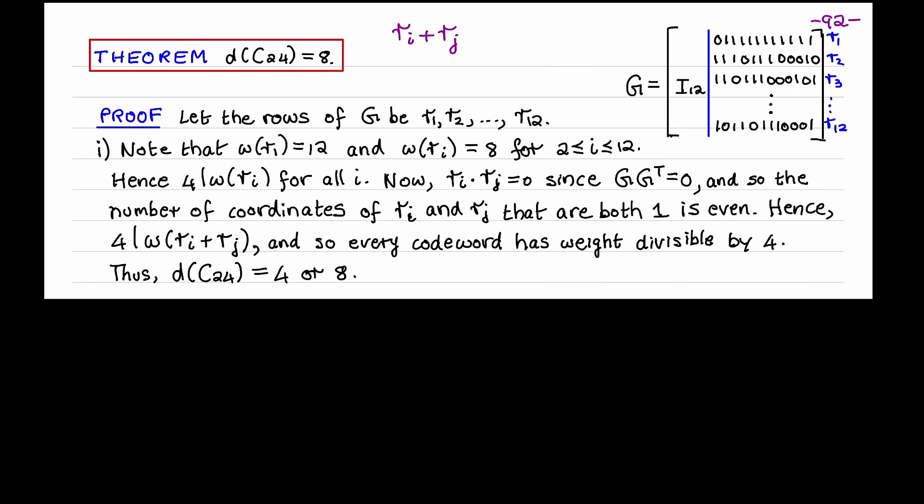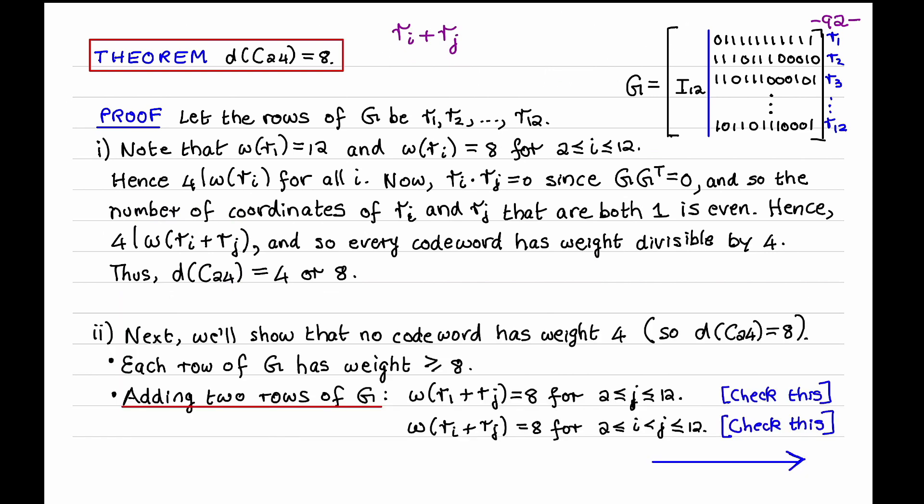This shows that the weight of the sum of any two rows of G must be a multiple of 4. Now since codewords in C24 are obtained by adding any number of rows of G, we see that every codeword in C24 has weight divisible by 4. And so C24 has distance either 4 or 8. It can't have distance greater than 8 because it has at least one codeword of weight 8, namely the second row of G. Next, we'll show that no codeword has weight 4. And then it follows from the previous observation that C24 has distance exactly 8.